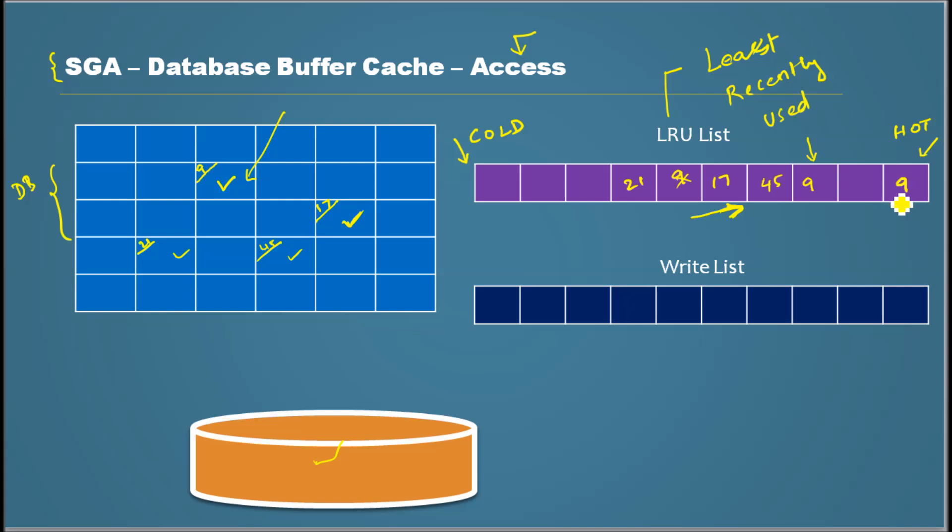The point is, 9 and 17 were reused frequently with whatever data is in there, so 9 and 17 go to the hot end of the LRU. And let's say 8 and 2 were also used, so they start somewhere in the middle. After that they were never used; they just reside there. In a particular period of time they were not at all used, so they go to this cold end.